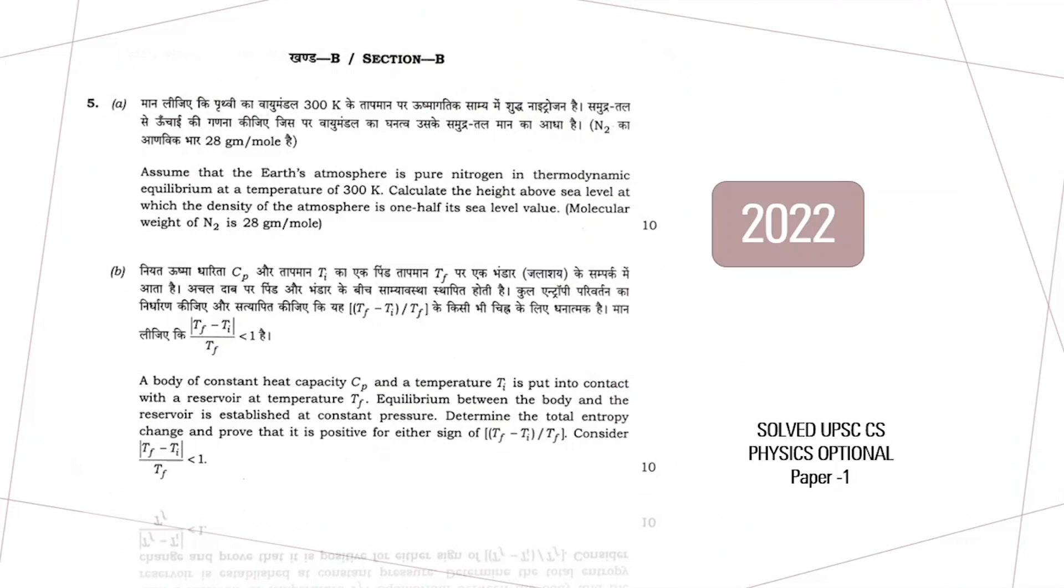We have to calculate the height at which the density of the atmosphere becomes one half of its sea level value. So let's start. We know the change in pressure is equal to minus rho g times the change in height.